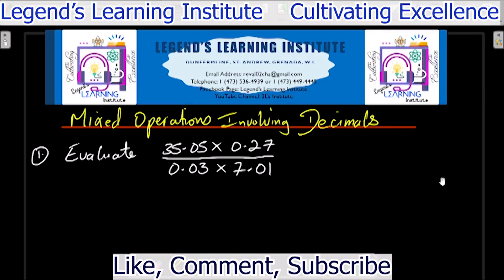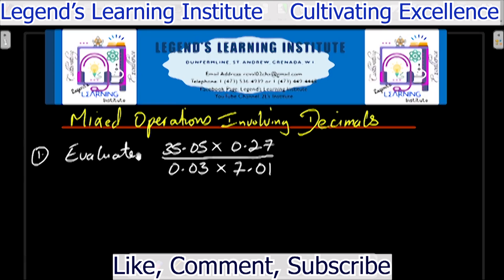Hi all, welcome to CSEC Mathematics with Mr. Charles. Today we are looking at some mixed operations involving decimals. The first question says evaluate 35.05 times 0.27 all over 0.03 times 7.01.